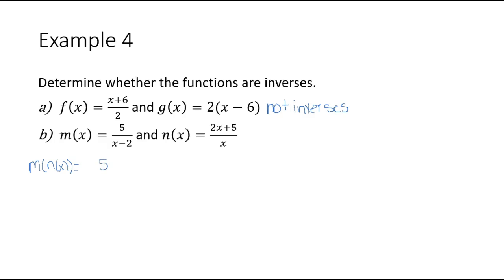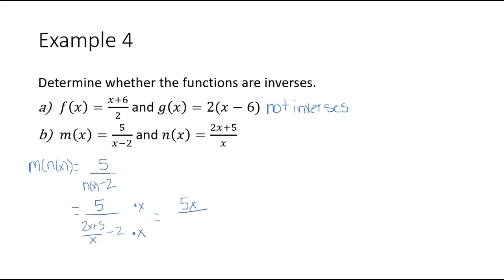My m function is 5 divided by x minus 2. Since I am substituting my n function in there, I take out the x and replace it with n of x. This gives me 5 divided by the quantity 2x plus 5 divided by x, and then minus 2. We have a fraction with another fraction on the inside, so I'll multiply by the least common denominator x — multiplying by x on the top and x on the denominator. This gives me 5x on top, and the x cancels with the denominator leaving 2x plus 5.